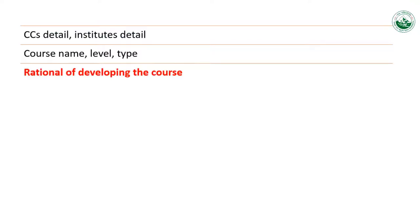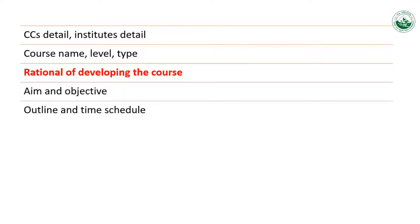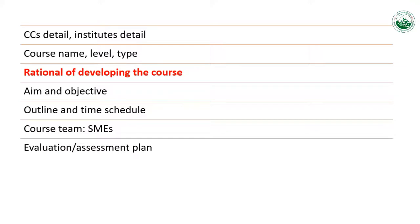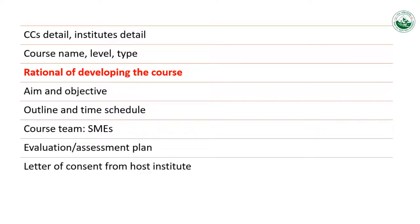The details you need to provide include: CCS detail, institute detail, course name, level, rationale of developing the course, aim and objective, outline and time schedule. You also need to specify who the subject matter experts will be, provide an evaluation and assessment plan, a letter of consent from the host university, and an introductory video.